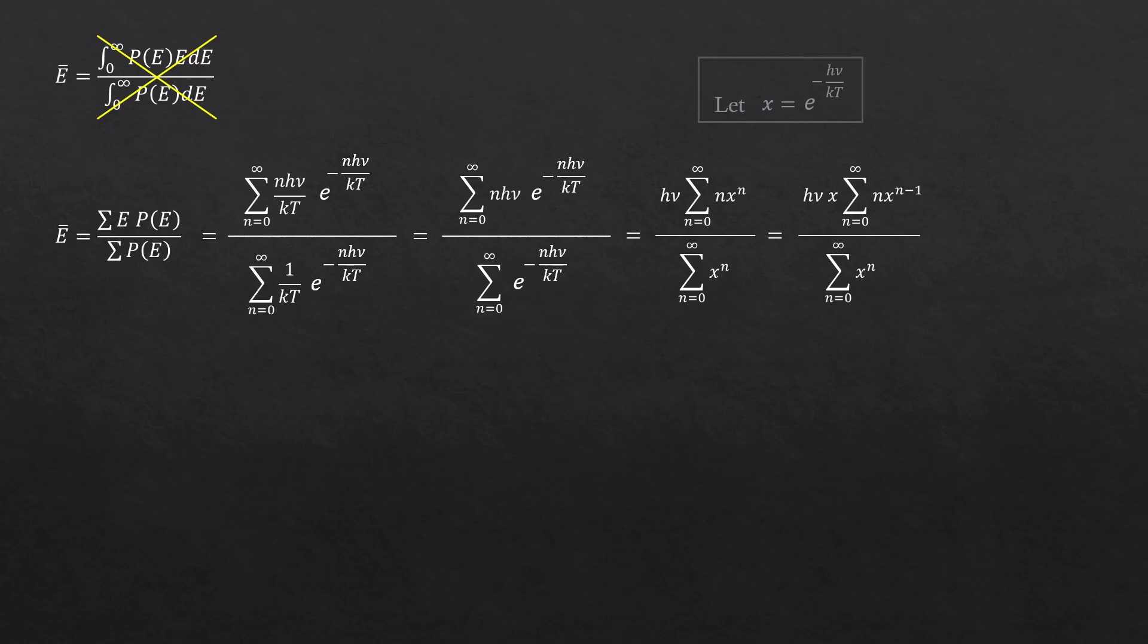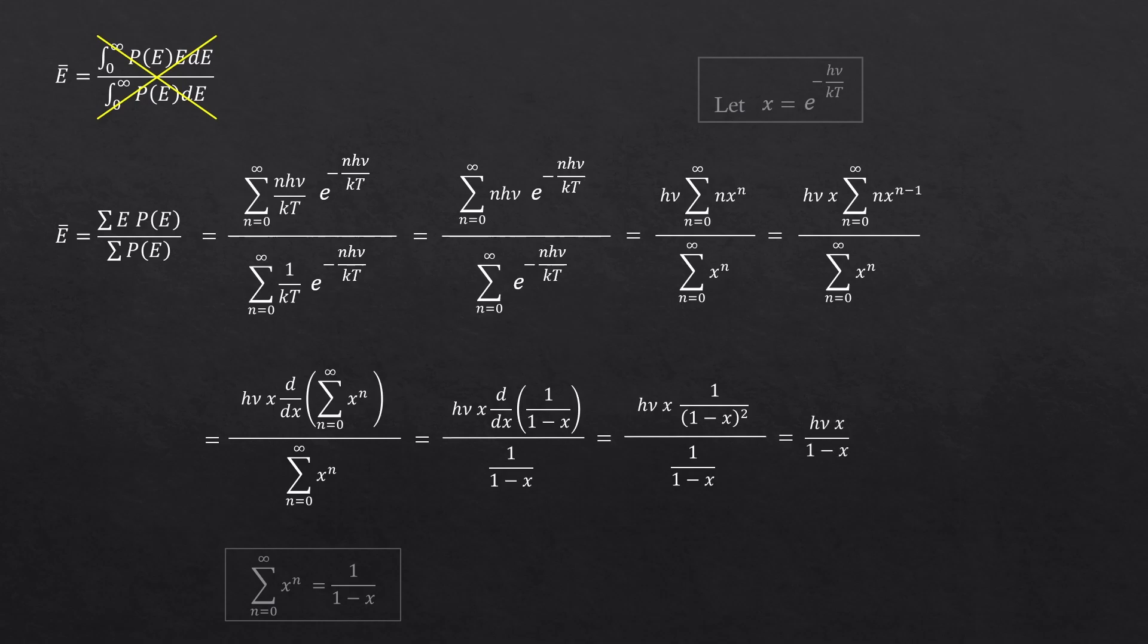The top one can be written as the derivative of the x to the n, right? And because sigma x to the n is algebraically 1 over 1 minus x, we can rewrite the equation like this. So this is the crucial key. And let's actually take the derivative.